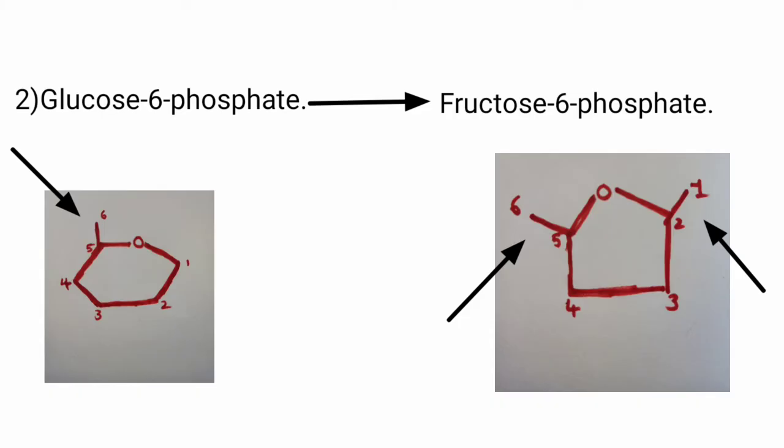Glucose-6-phosphate is converted to fructose-6-phosphate by the enzyme isomerase. In this step, the enzyme isomerase catalyzes the isomerization reaction.